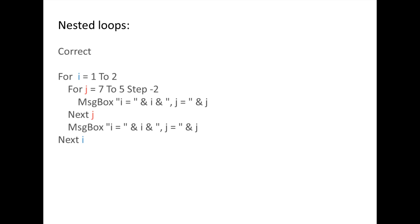When using nested loops, it is important to remember that the inner loop must be completely contained within the outer loop. On the left, the for j and next j statements are completely contained within the for i and next i statements. The j loop must begin and end inside the i loop.